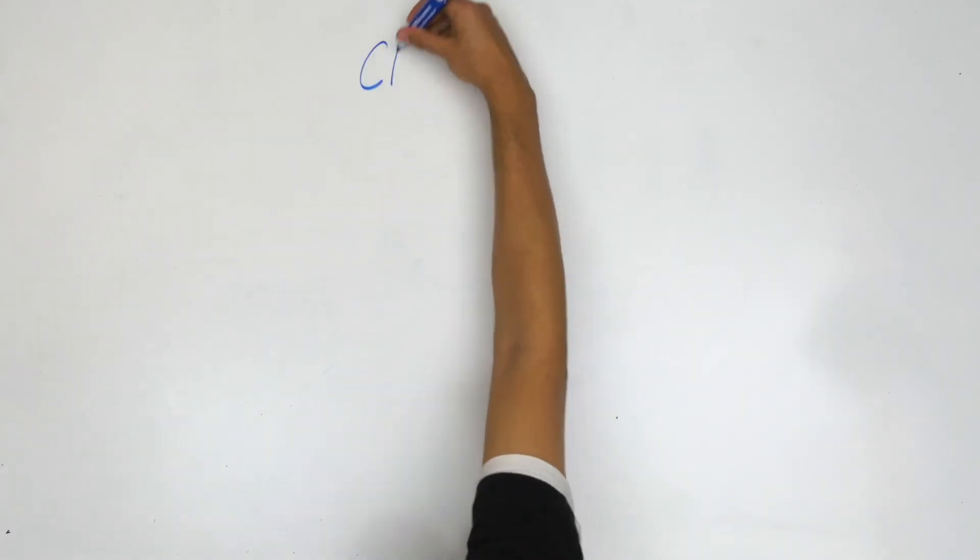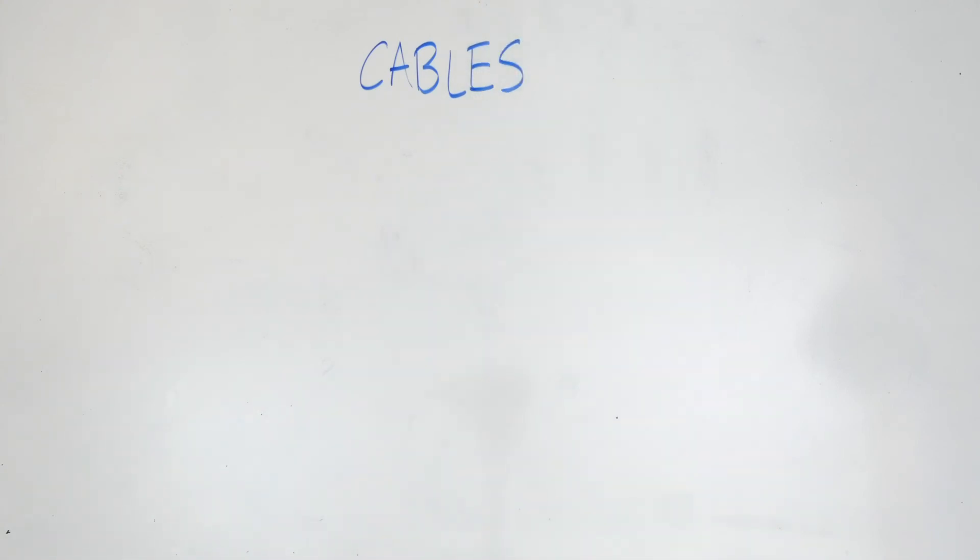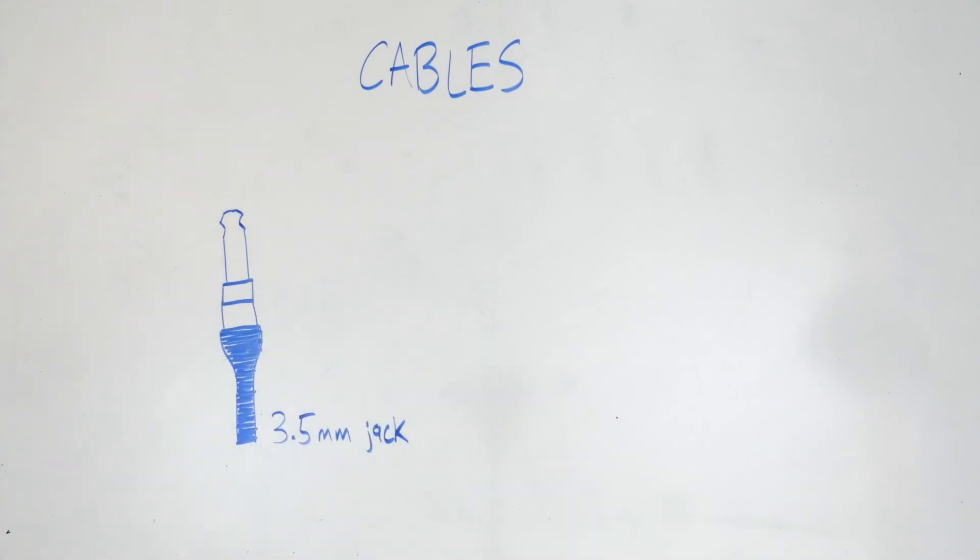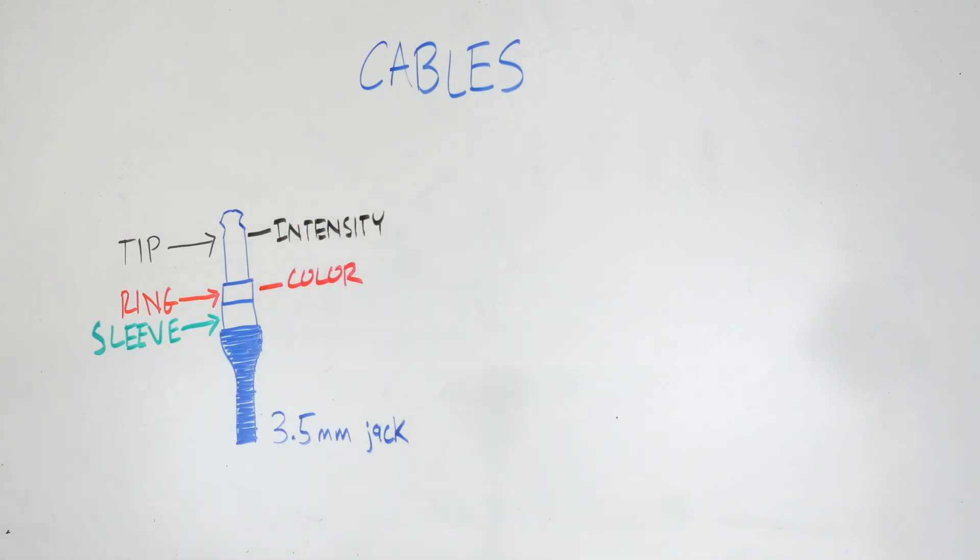There are six different accessory cables that can be used to connect the A80 tuna blue with other lights or devices. Each of these cables have at least one 3.5mm jack with the tip, ring, sleeve configuration. The contact point for intensity is the tip, the contact point for color is the ring, and the sleeve acts as ground.